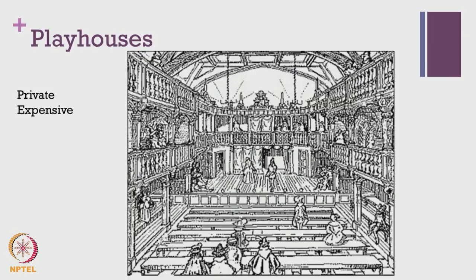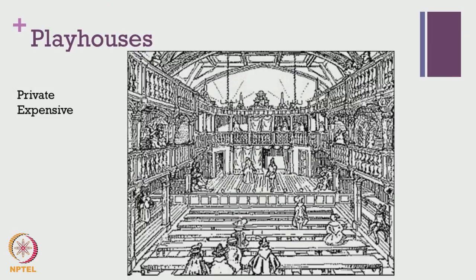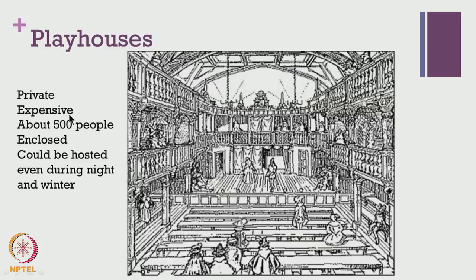The third kind were known as playhouses — they were also private houses and quite expensive, capable of housing about 500 people at the same time. They were enclosed, which made a big difference to the way plays were staged. Since they were not open in the centre, plays could be staged during night and winter as well. The other open-air amphitheatre spaces like the Globe made it quite inconvenient to stage plays during bad weather or when there was no sunlight. However, since the playhouses catered to a private upper-class audience, they did not have the same kind of popularity that Shakespeare's typical amphitheatrical ambience had.